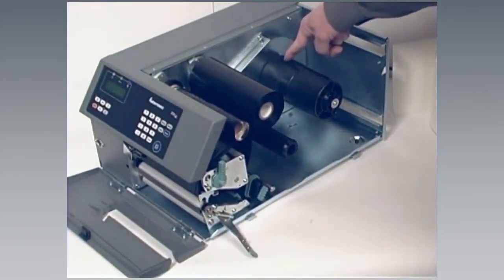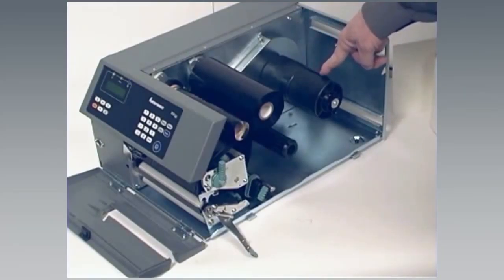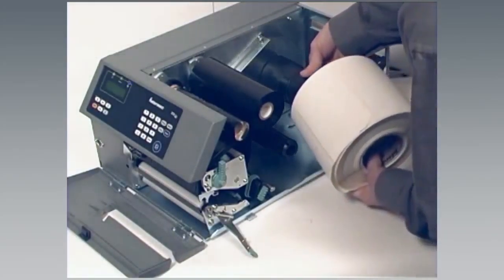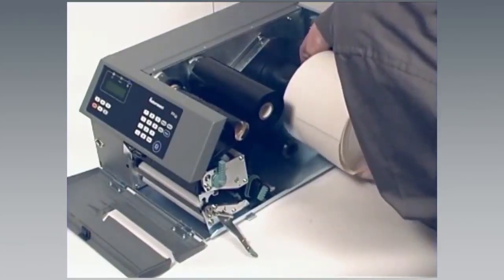If you are using a media roll with a 76mm 3-inch core, install a 3-inch adapter on the media supply hub before placing the media on the hub. Instructions for this procedure are in the printer's user's guide, which can be downloaded from the Intermec website. Otherwise, just fit a new roll of media on the supply post and push the roll in as far as it will go.